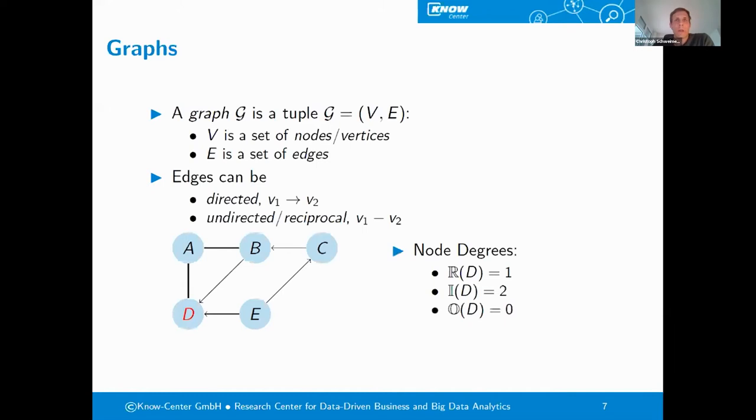Here, just a very short example of a graph with five nodes, four directed edges, and two reciprocal edges. When we look at the graph, we see that the reciprocal degree for the node D in this case is one, since it has one reciprocal edge to another node. It has an in degree of two, since it has two incoming edges, and it has an out degree of zero, since it has no outgoing edge.